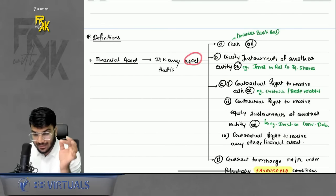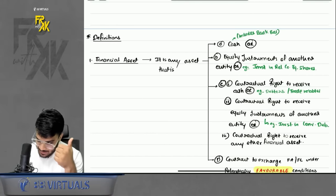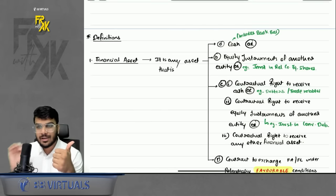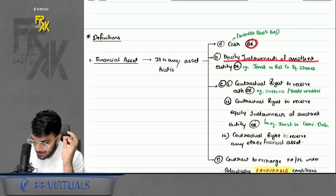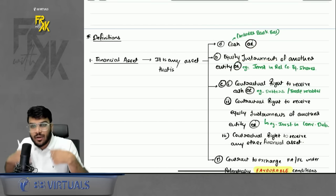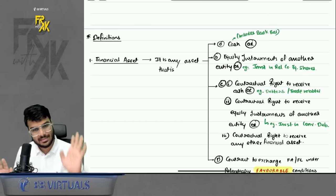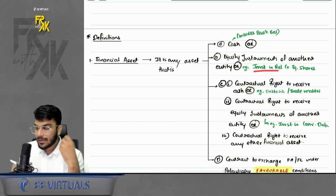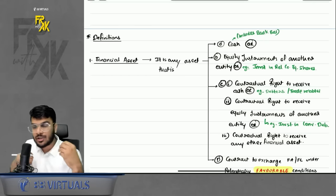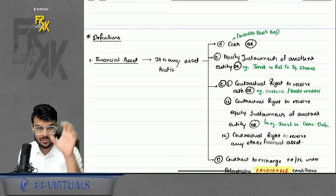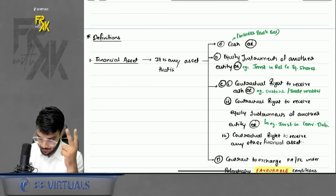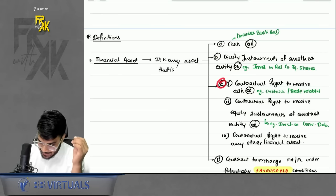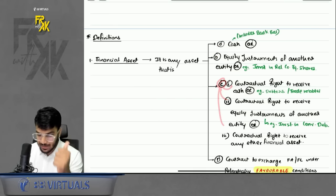A financial asset is any asset which is either cash — meaning cash balance or bank balance — or equity instruments of another entity. For example, if I invest in shares of Reliance Company, those equity shares are a financial asset for me. Point C has three sub-points: C1, C2, and C3.